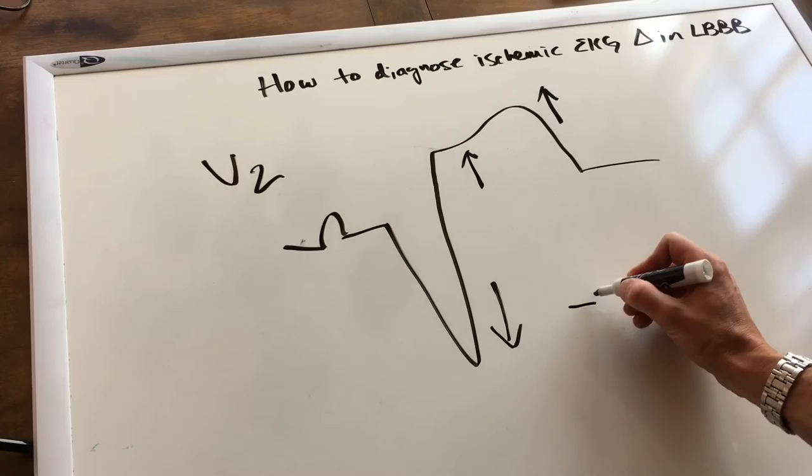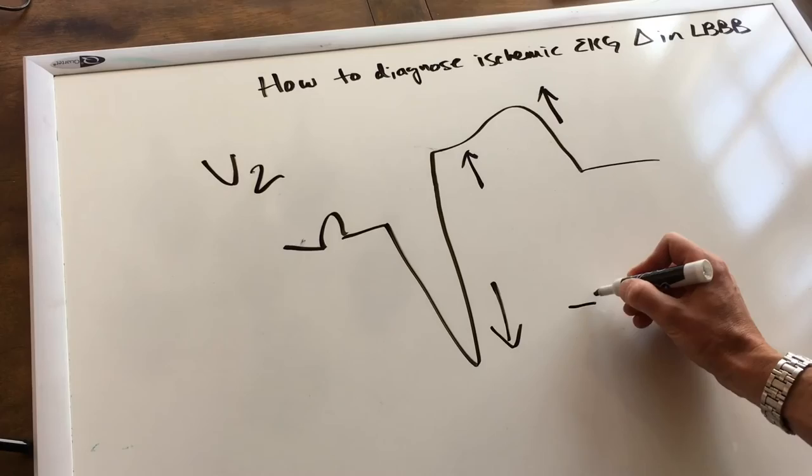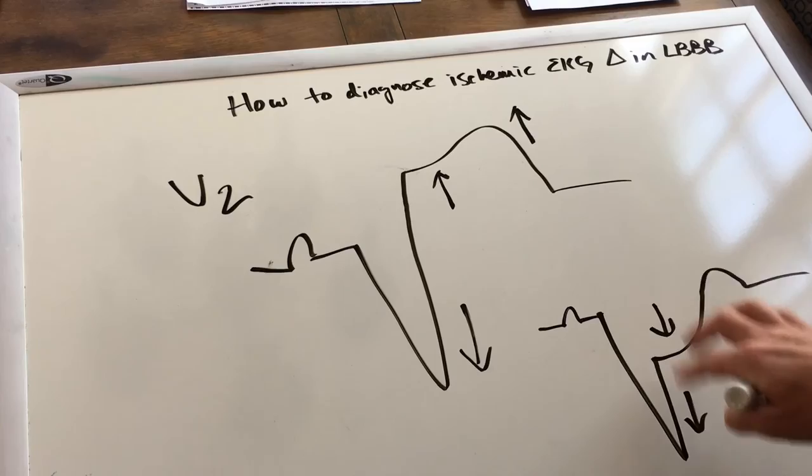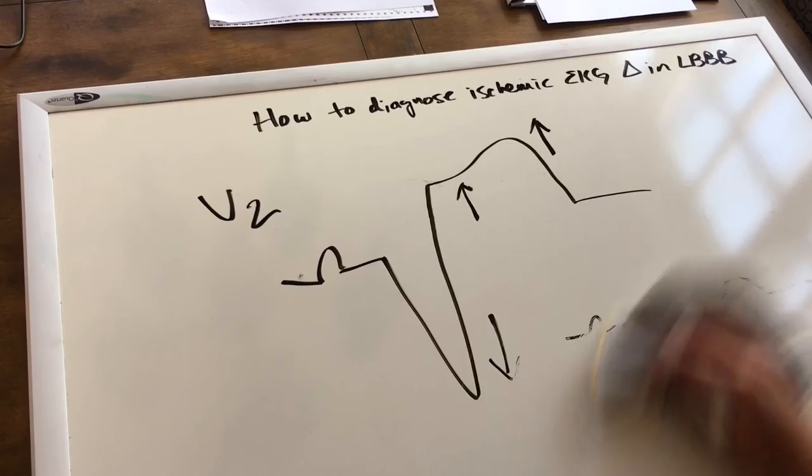Maybe this is V2. With ischemia or myocardial infarction, you would expect to see the QRS going down and then the ST segment going down as well — so they are inappropriately concordant. This is discordant; this is concordant.